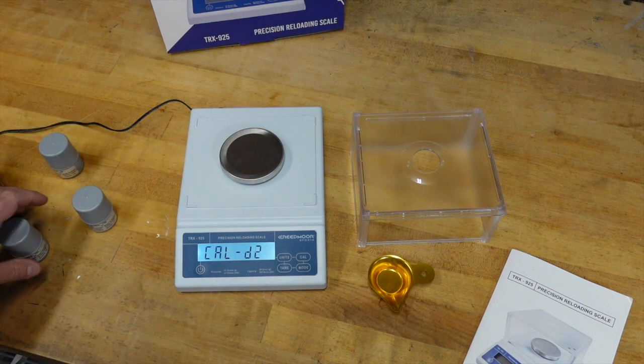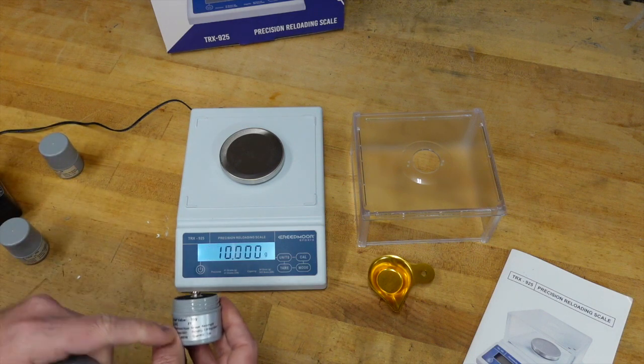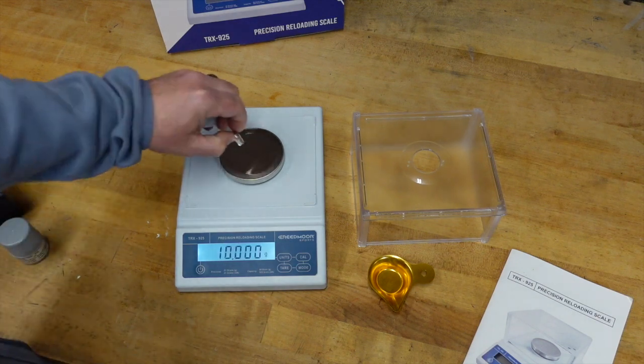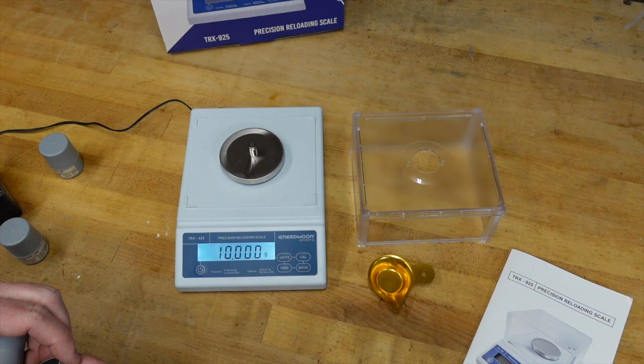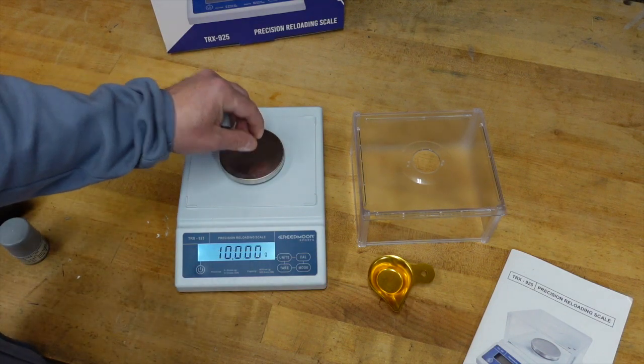Now it's going to tell me it wants the next one, which is calibration weight two, which is the 10 gram. It's calibrating. It's gone solid. So we can go ahead and take that one off.